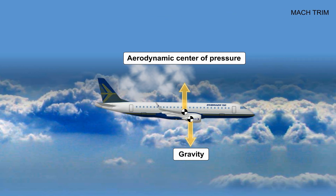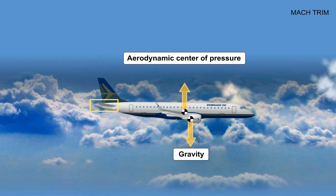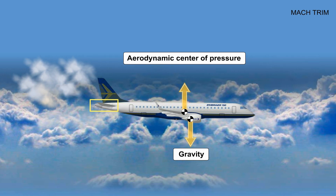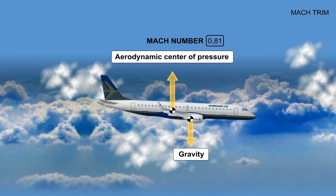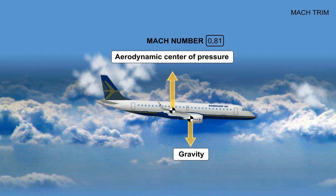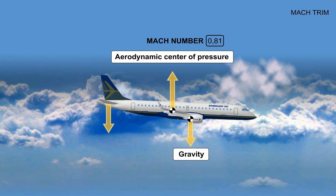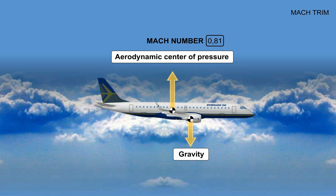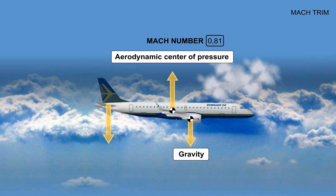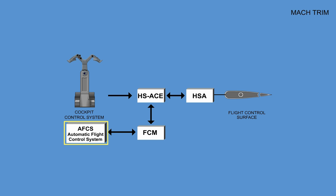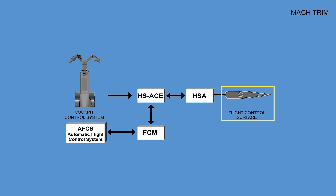Mach trim. The mach trim is used to bias the horizontal stabilizer position in order to compensate for a change in location of the wing aerodynamic center of pressure. Acceleration of the aircraft causes an aft movement of the wing aerodynamic center of pressure, which causes a pitch-down moment and requires the horizontal stabilizer to be trimmed nose up to compensate. As mach number increases, an increase in horizontal stabilizer mach trim up command is required. The mach trim function commands an incremental change in stabilizer position as a function of mach number, which is used to eliminate the nose-down tendency of the aircraft in the transonic region.